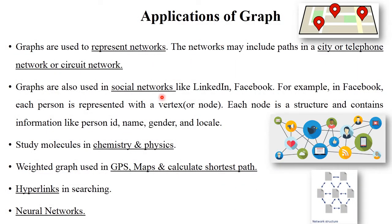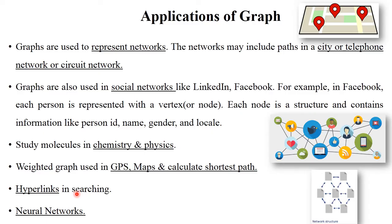Graph is a particular data structure we use in our daily life. Graphs are used to represent networks — networks of the city, telephonic network, circuit network, etc. In GPS or Google Maps, graph data structure is used to show direction from source to destination. Graph is also used in social networks like LinkedIn and Facebook, where each person is represented as a vertex with attributes like person ID, name and gender. It is also used to study molecules in chemistry and physics, weighted graphs in GPS maps to calculate the shortest path, hyperlinks, and neural networks.